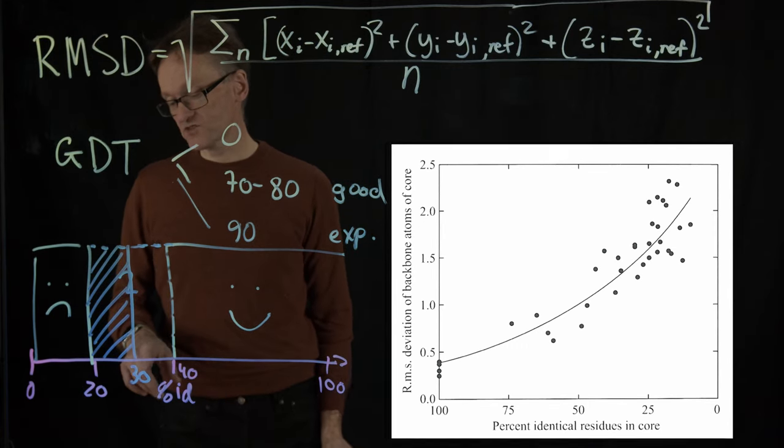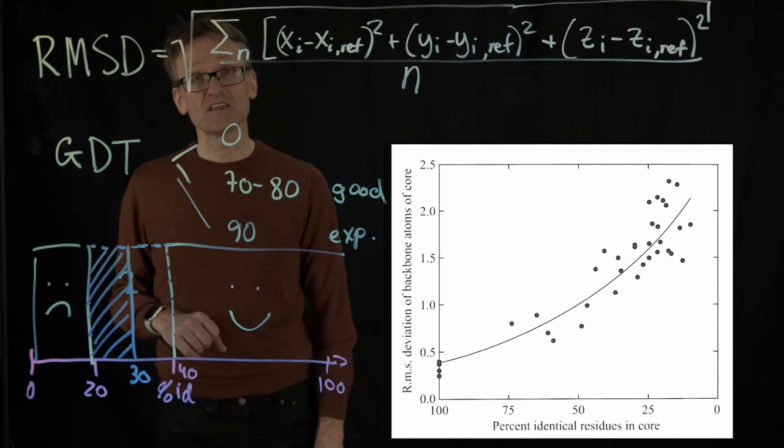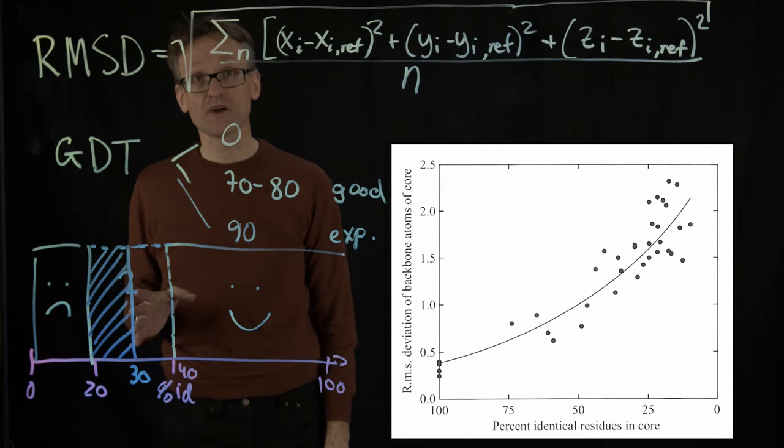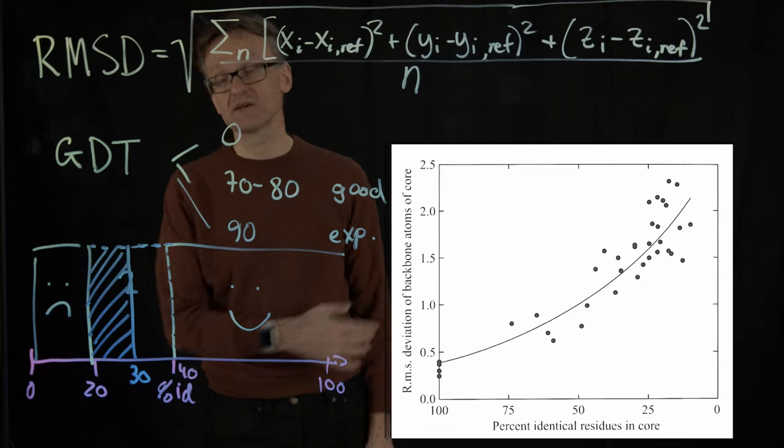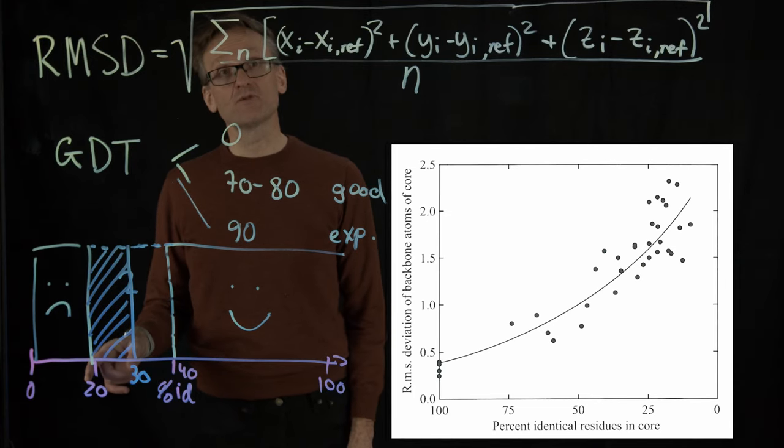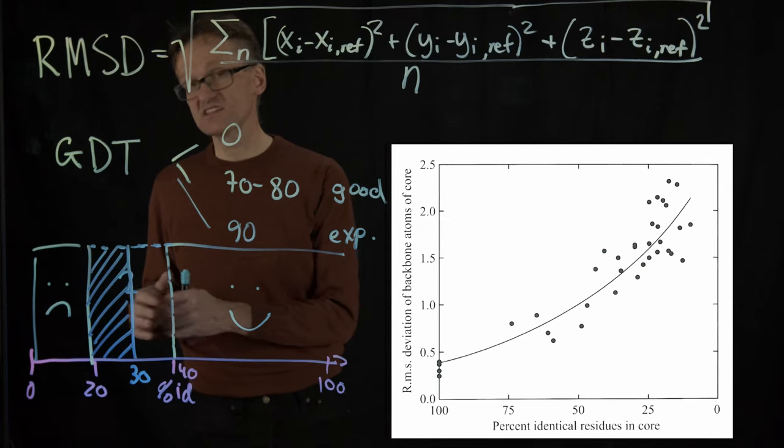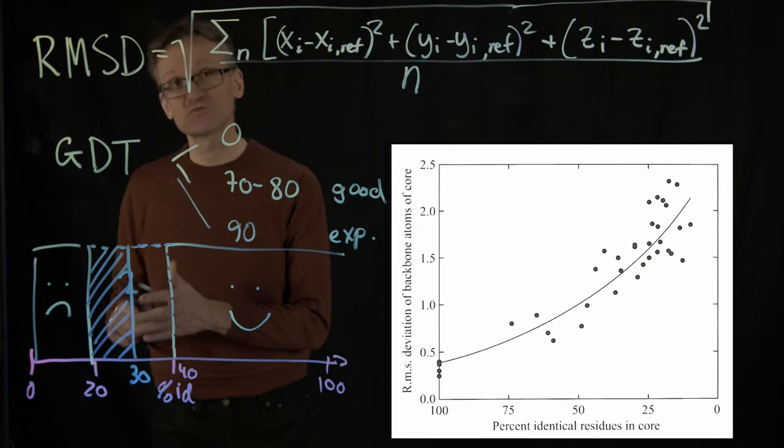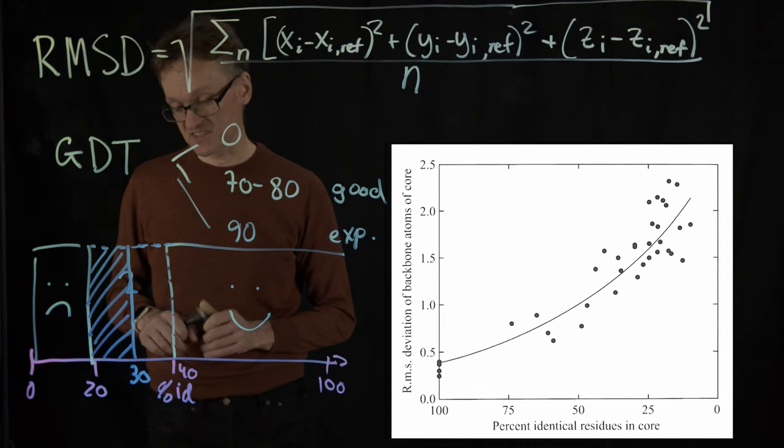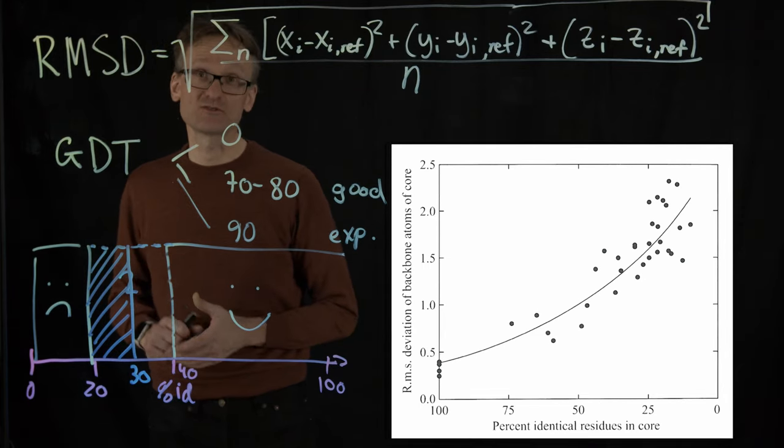The short story here: if somebody shows you these sequences and they have 30% sequence identity or better, you should believe that they have the same fold. Once they only have 20% you're looking at noise. Don't trust it. This twilight zone is fairly narrow, but this is of course where a lot of the fascinating research happens. That's how we move down from 40 to 30 here.